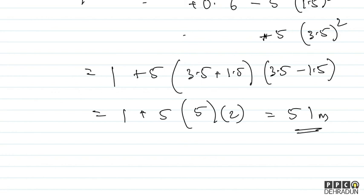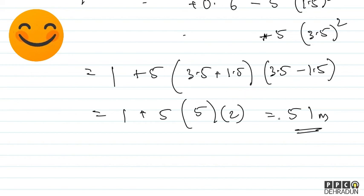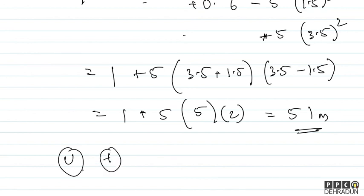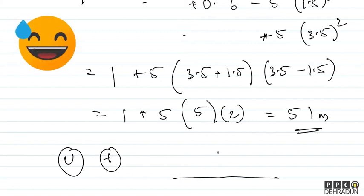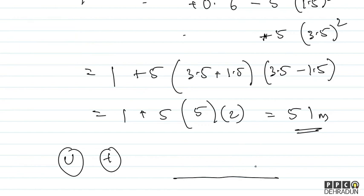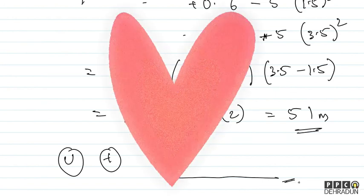तो दोनों पत्थरों के बीच की दूरी उस moment पर 51 meters आई। Solution शुरुआत में complicated लग रहा था, लेकिन calculation बहुत simple निकली। Distance न U पर depend करती है, न T पर। एक assumption यह है कि ground इतना नीचे है कि कोई भी पत्थर उस समय तक ground strike नहीं करता। इसी तरह 'Can You Crack It?' series में मिलते रहेंगे — take care!